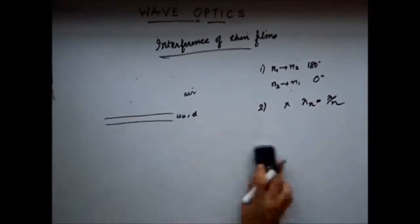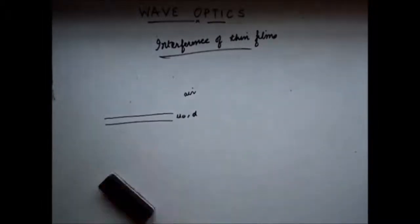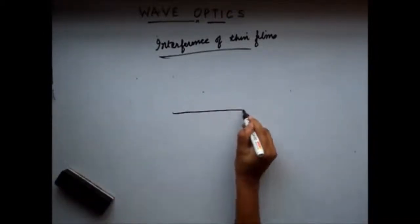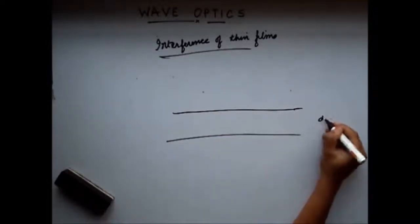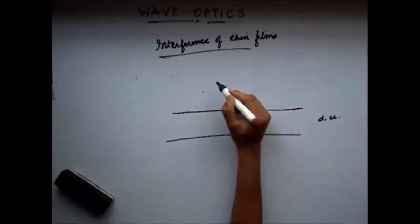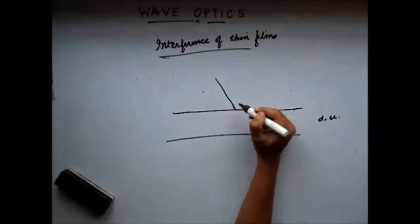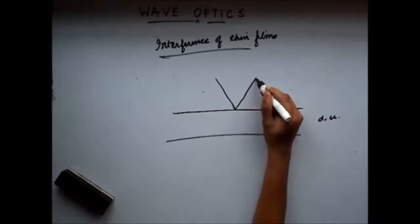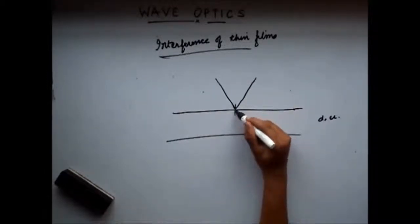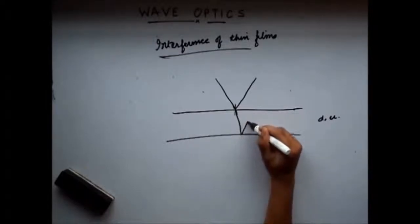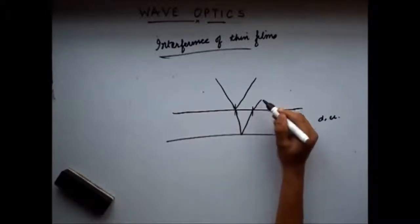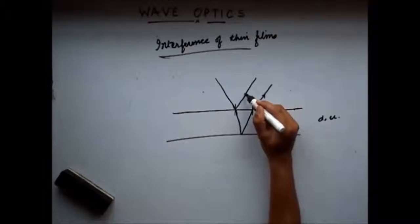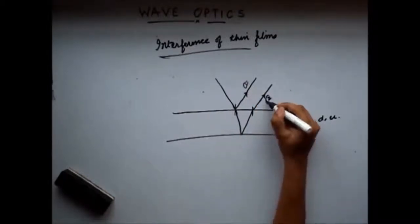These are the two things we need to keep in mind when we study this concept. Now, let's draw an enlarged view. This is my thin film of thickness d and refractive index mu. Light waves come and strike here, there is a reflection occurring, and there is some reflection occurring again at the second surface. Finally, when the light waves emerge out, they emerge parallelly. So this is my first wave and this is my second wave.